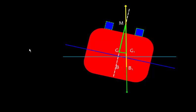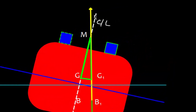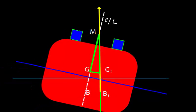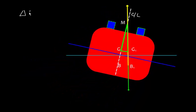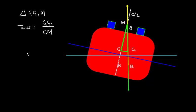We have a triangle, and the point M is the intersection of the centerline with the new line of action of the buoyancy force. In triangle GG1M, the angle theta is the angle of list. Therefore, tan θ = GG1 / GM. We also know that GG1 = (w × d) / (W × GM), where w × d is the list moment.